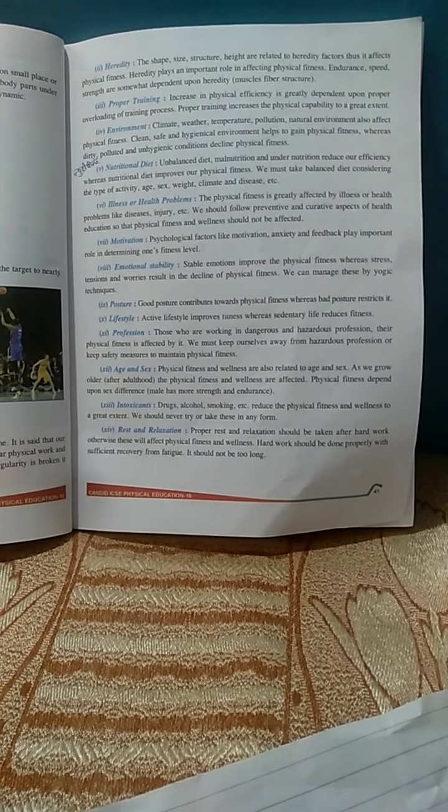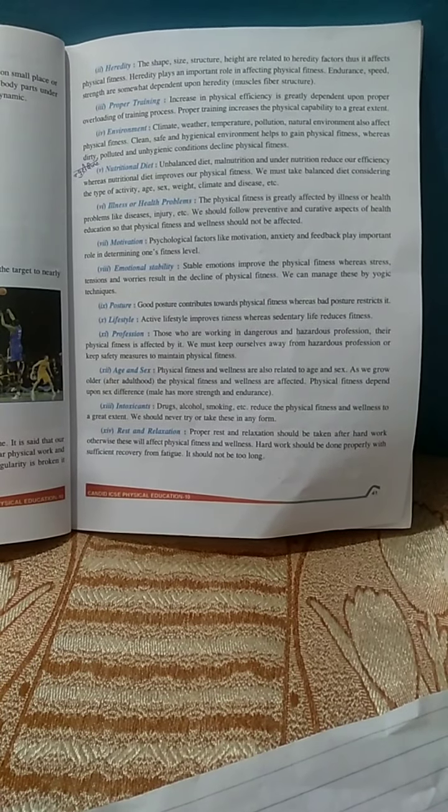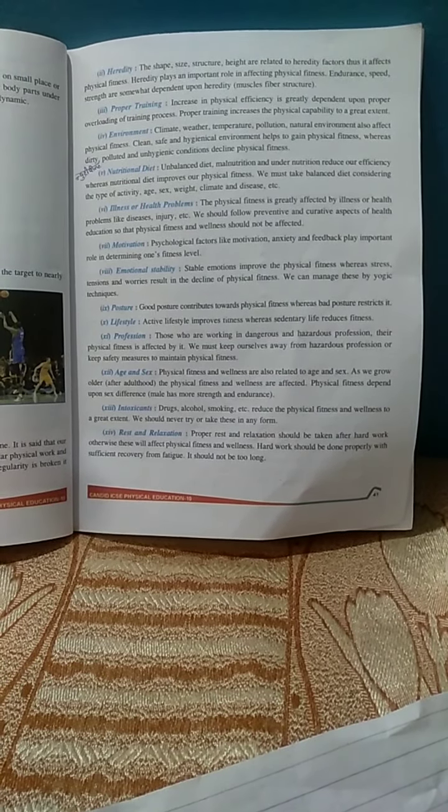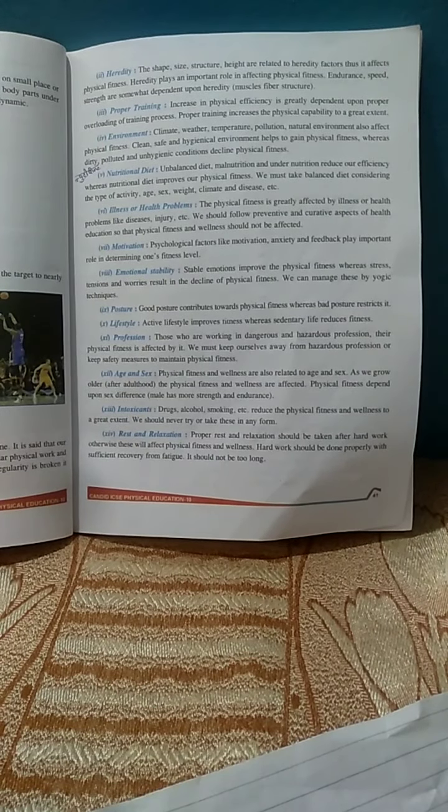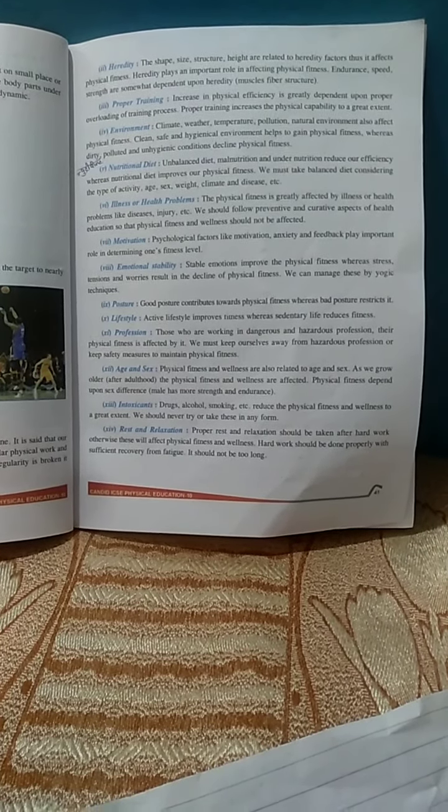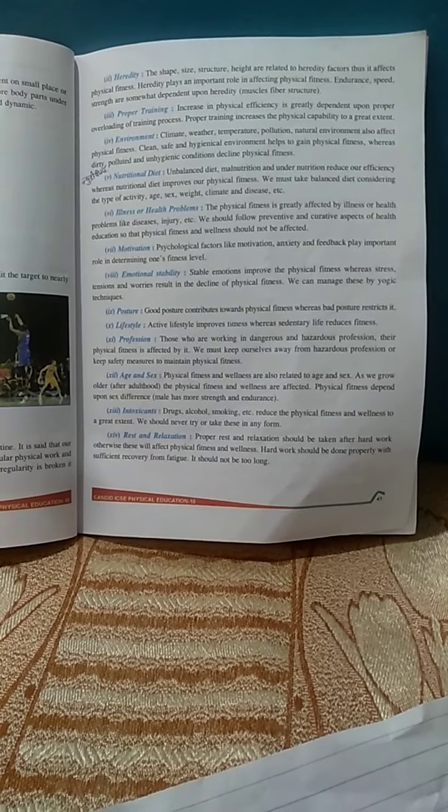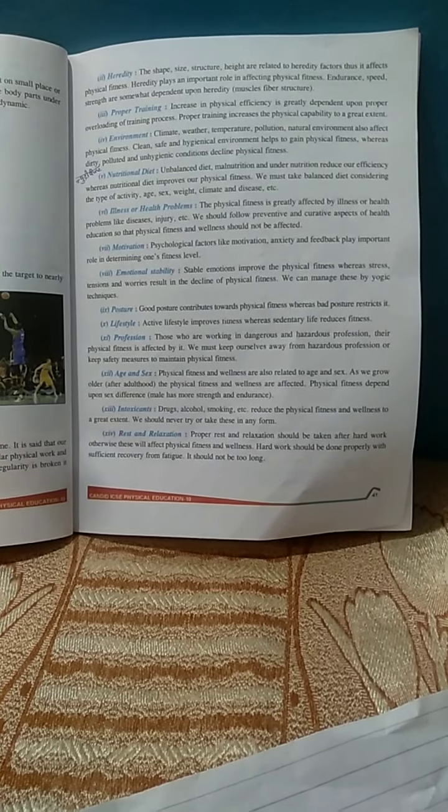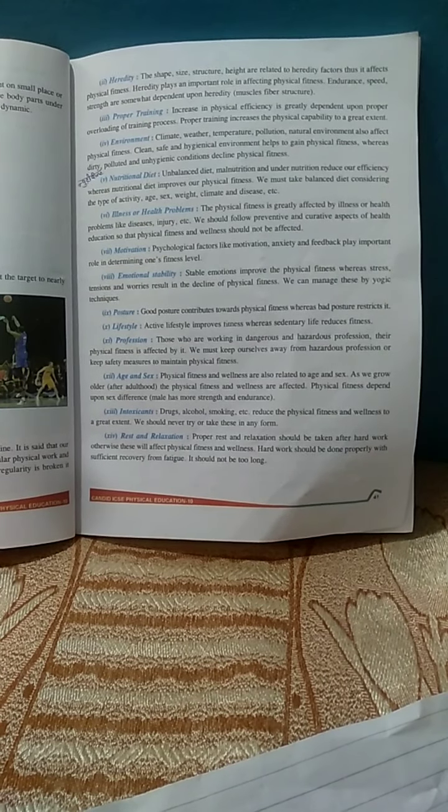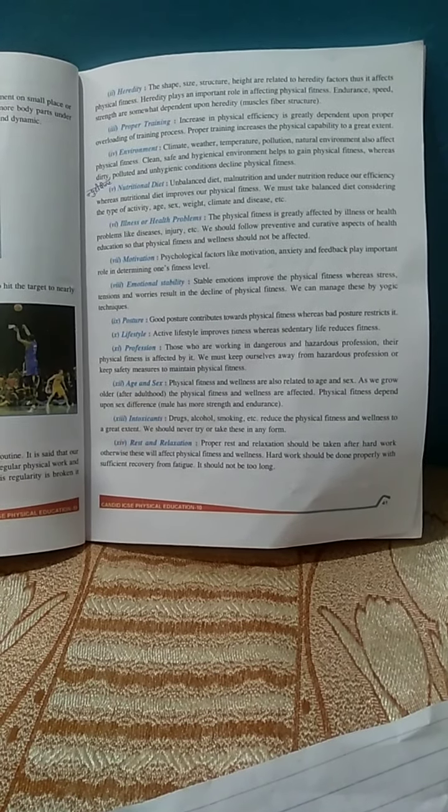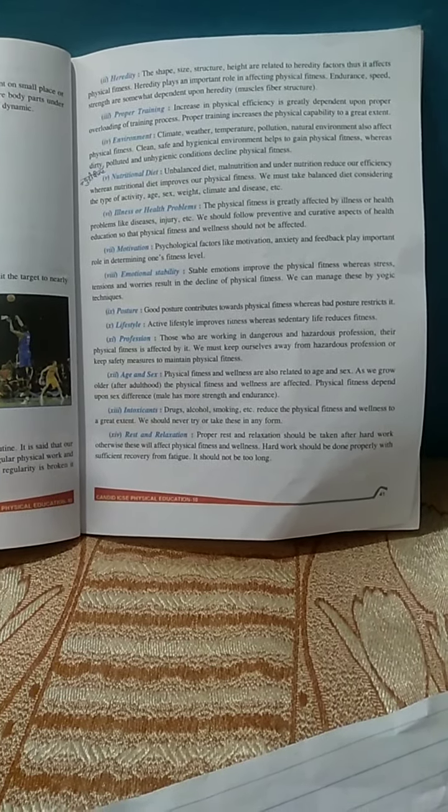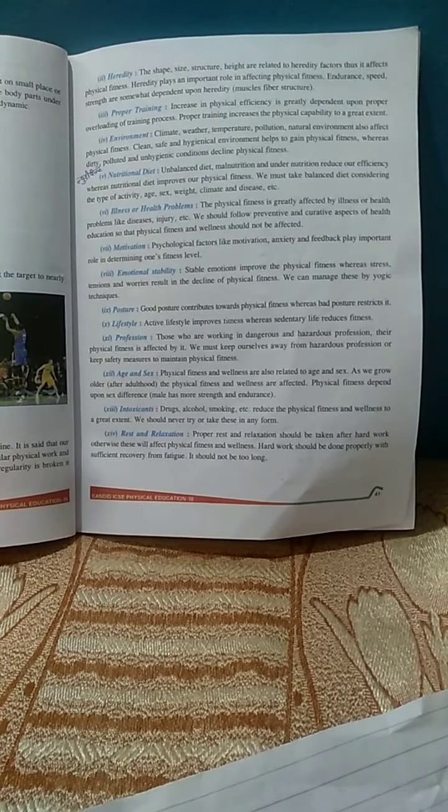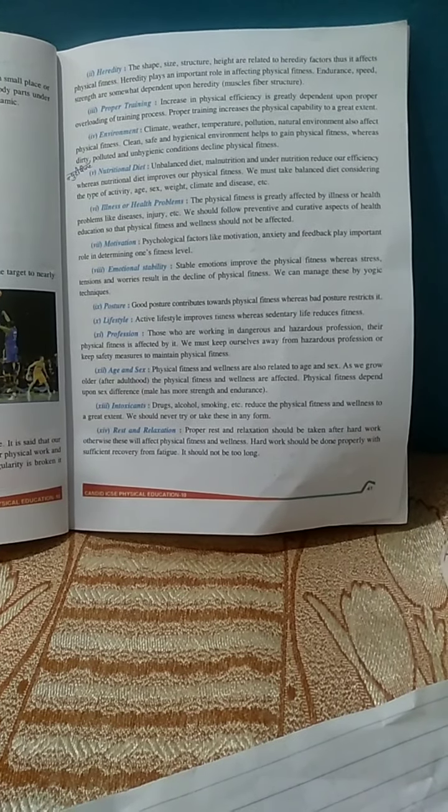The next is age and sex. Physical fitness and wellness are also related to age and sex. As we grow older, the physical fitness and wellness are affected. Intoxicants - drugs, alcohol, smoking etc. reduce physical fitness and wellness. So we should always keep distance from all these things.